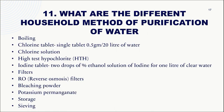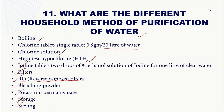Household methods for purification of water include: boiling; chlorine tablet — one tablet of 0.5 grams (500 mg) for 20 liters of water; chlorine solution; high-test hypochlorite; iodine tablets; filters; RO filters (the most efficient and highly recommended method); bleaching powder; potassium permanganate; and storage and sieving, which can also reduce impurities.